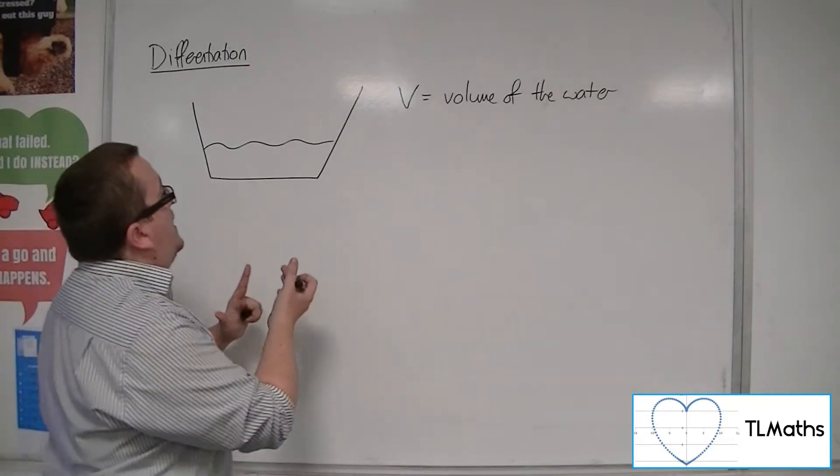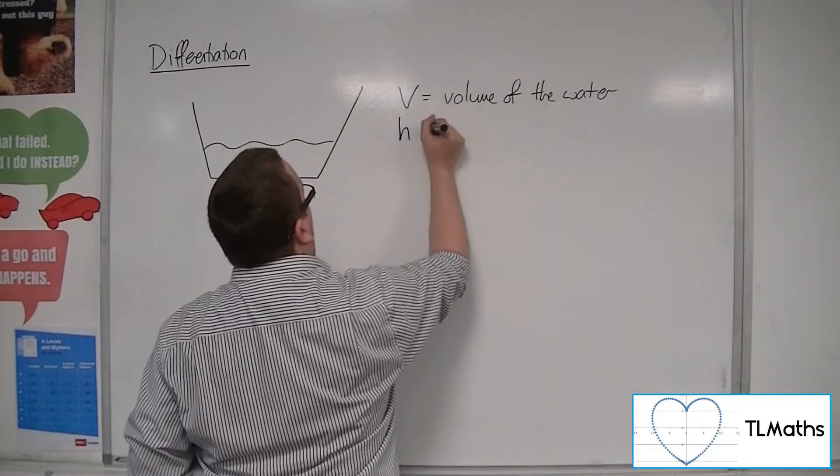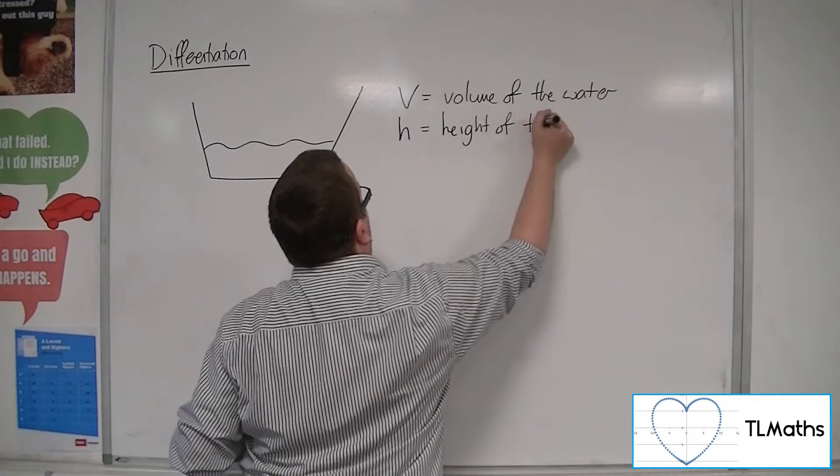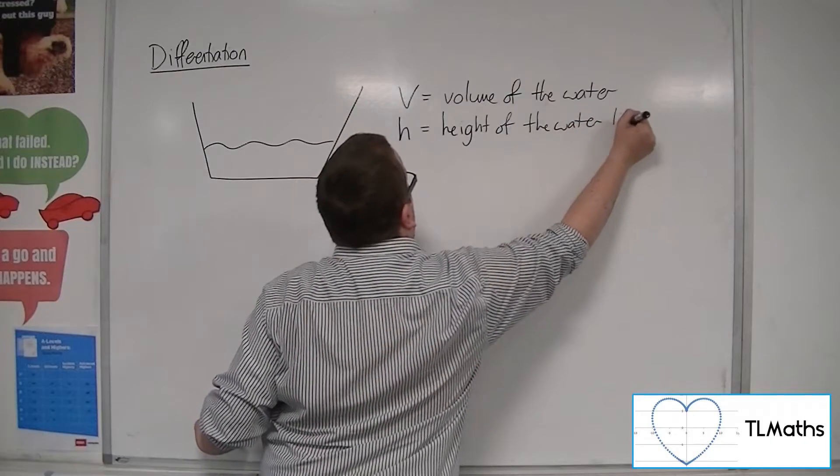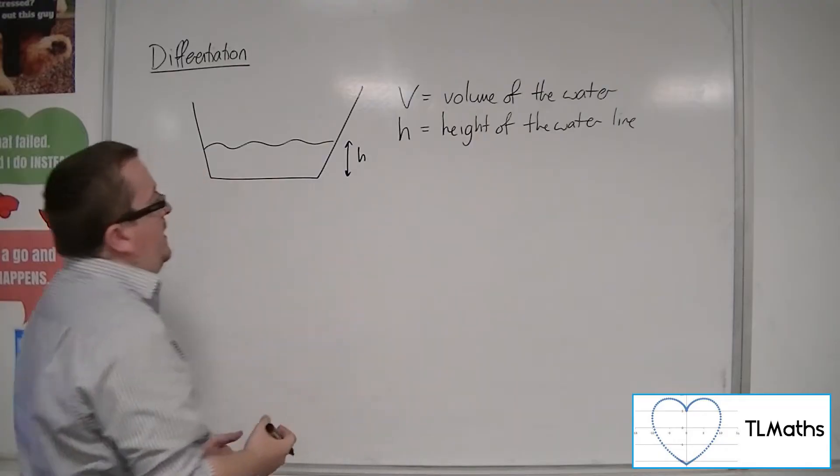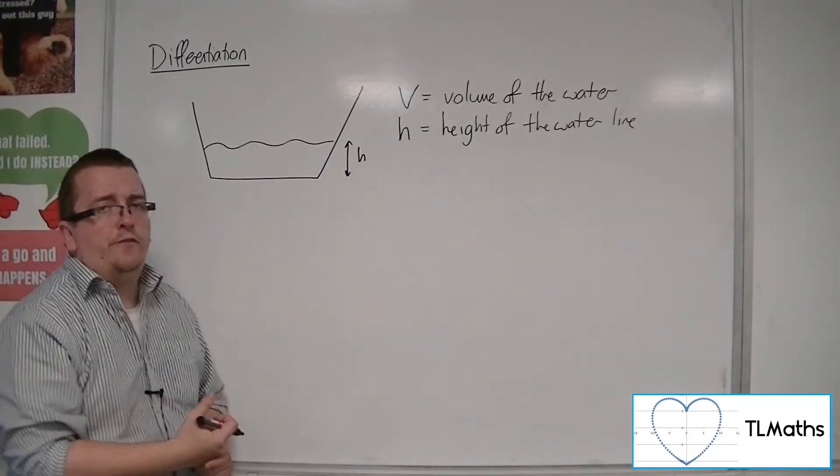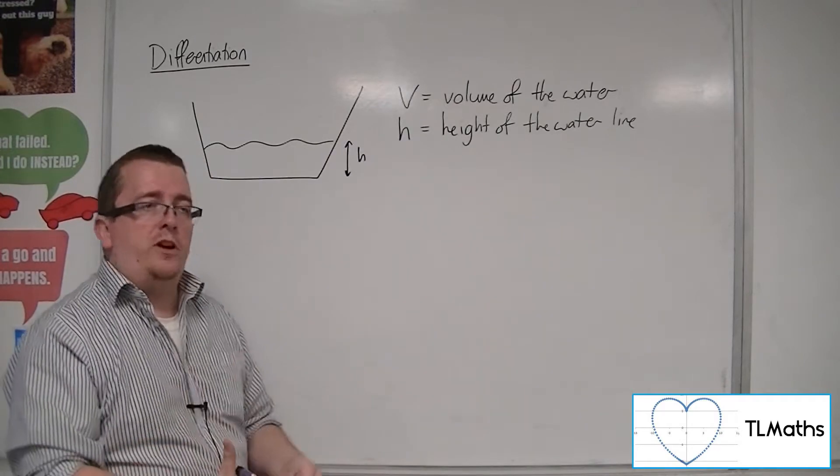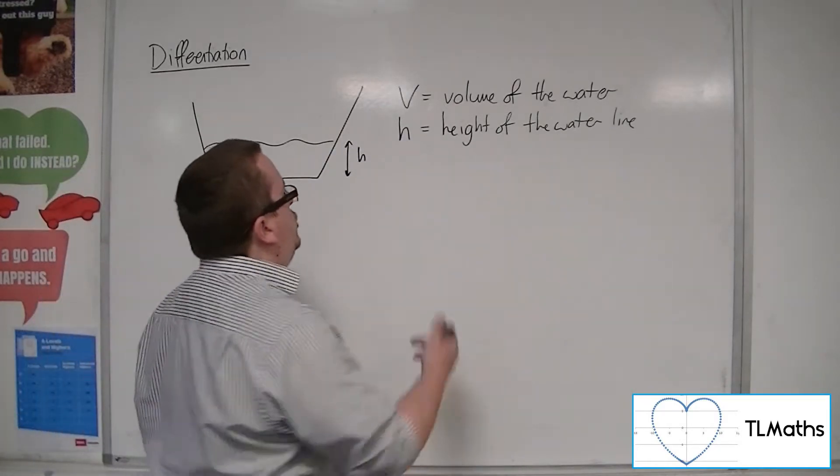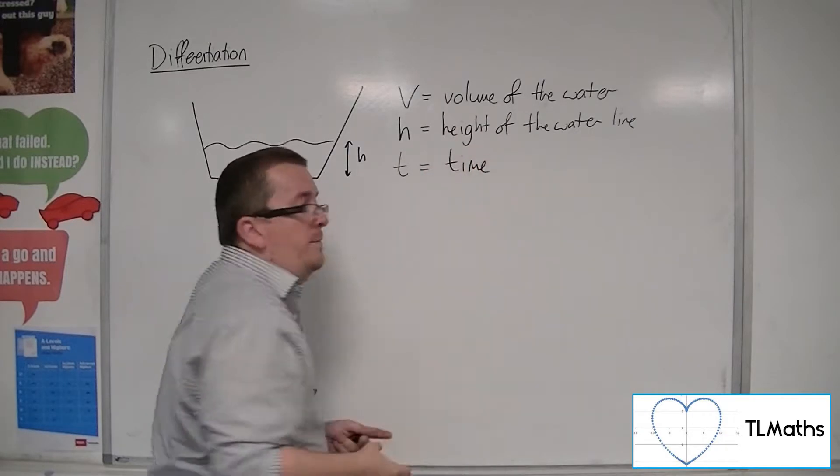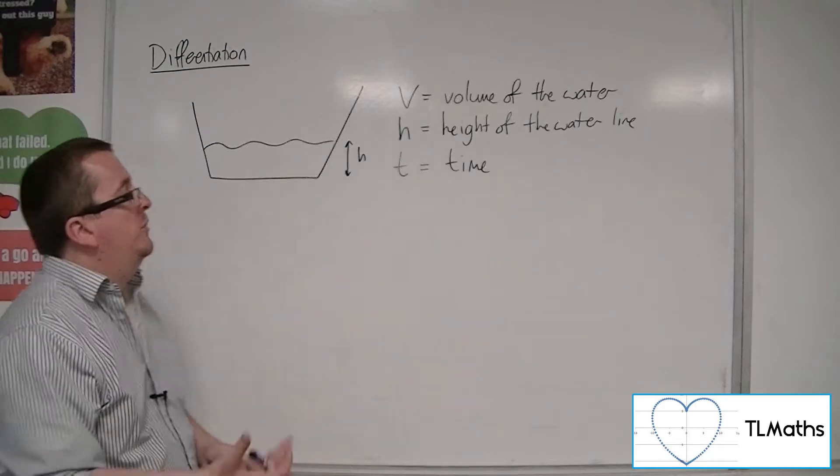We might look at the height of the water, of the water line. That could be H. And then, of course, this is happening over a period of time because the volume and the height will be changing. So we'll have a third variable which will represent time, which might be in seconds, for example.